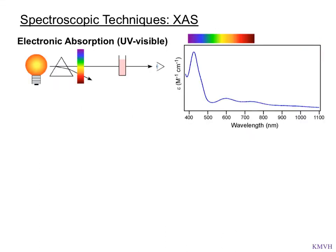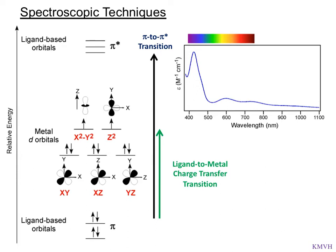Let's remind ourselves what's happening in electronic absorption. We have a light source that gets sent through a prism to give us distributed light, goes through the sample, into the eye. We get a spectrum that is a plot of absorbance versus wavelength for UV-visible spectroscopy. We interpret those absorptions due to ligand-to-metal charge transfer — ligand pi or sigma orbitals absorbing into the empty d set — d-to-d transitions, and pi-to-pi-star transitions.